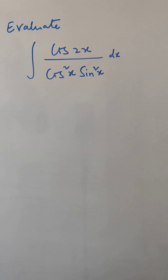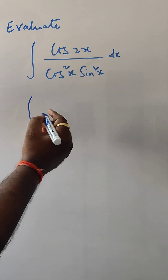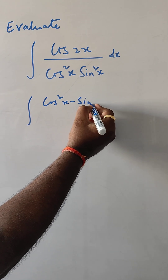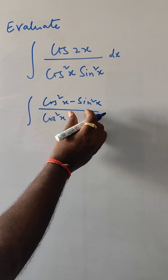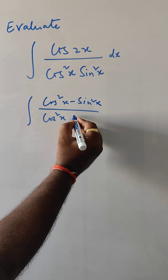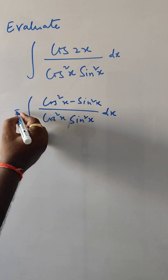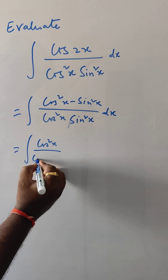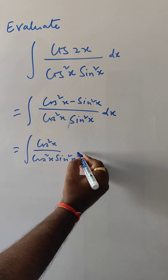Let's evaluate this indefinite integral problem. So let's start: cos 2x can be written as cos²x minus sin²x. And here we have cos²x minus cos²x times sin²x, dx.